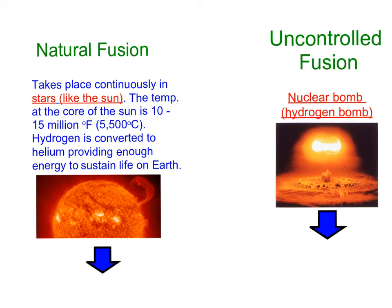Natural fusion is the sun — it takes place continually. The temperature at the core of the sun is between 10 and 15 million degrees Fahrenheit, or about 5,500 degrees Celsius. It's so hot and there's so much pressure that hydrogen atoms slam together, creating helium and releasing energy that travels about eight minutes through space to reach Earth.